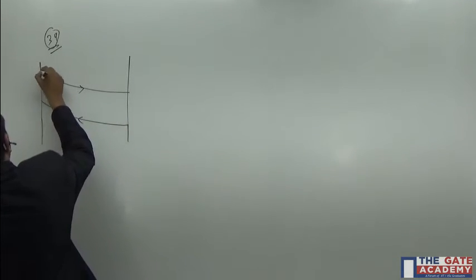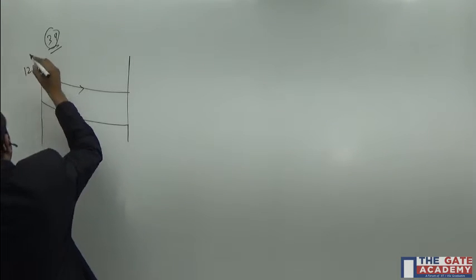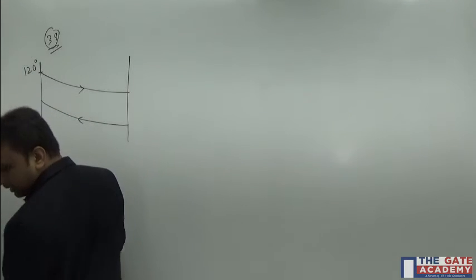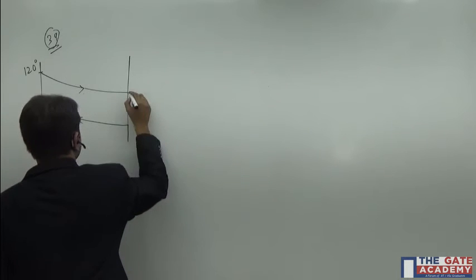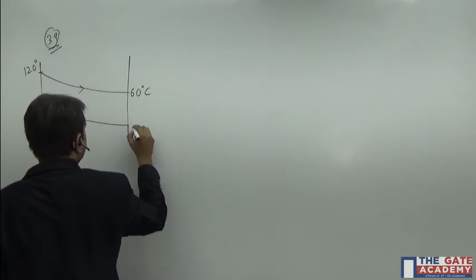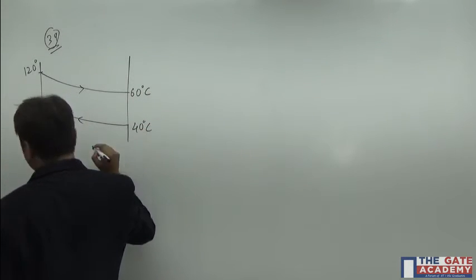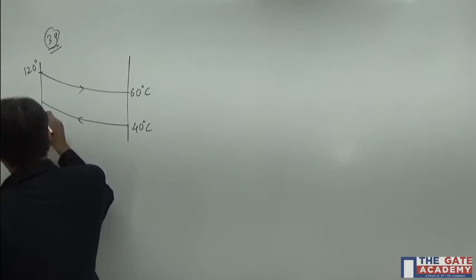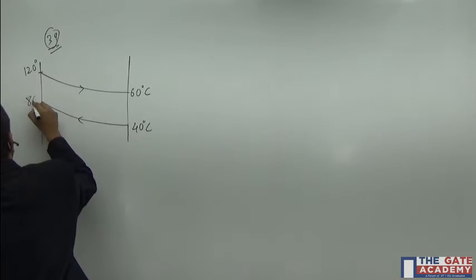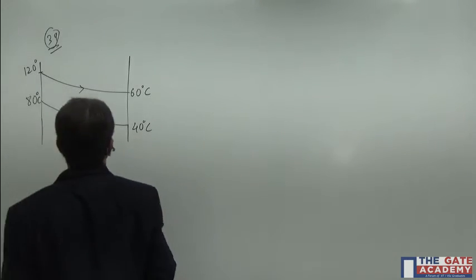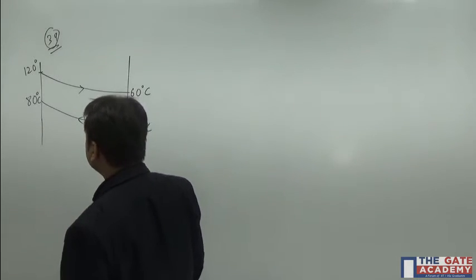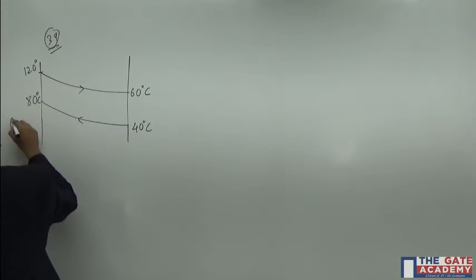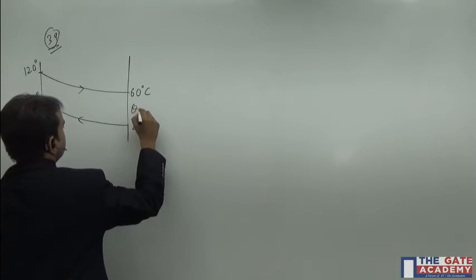The oil is at temperature of 120 degrees Celsius and leaves at 60 degrees Celsius, it cools down. Whereas water enters at 40 degrees Celsius and exits at 80 degrees Celsius. You can see that theta 1 is 40 degrees Celsius.